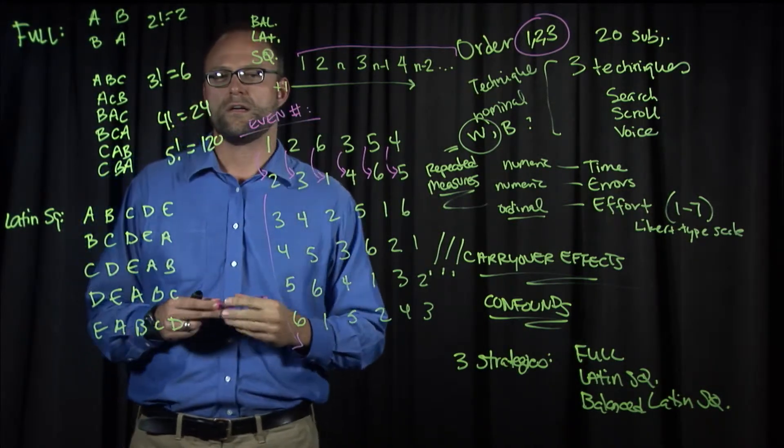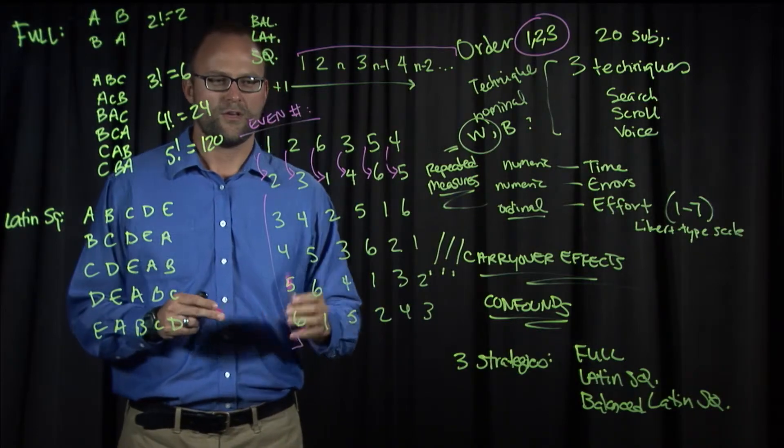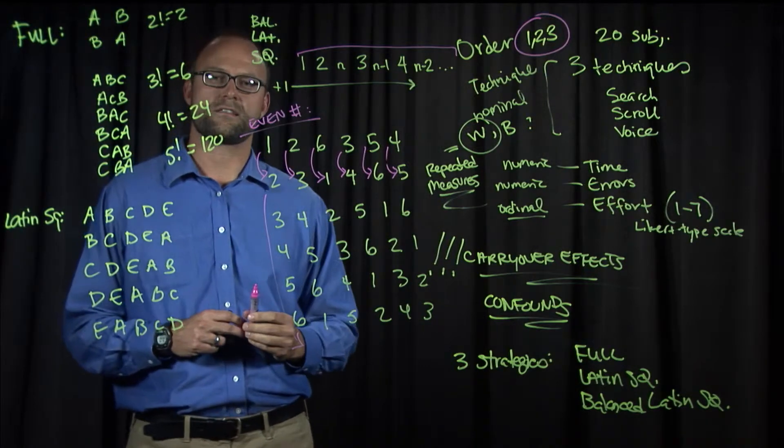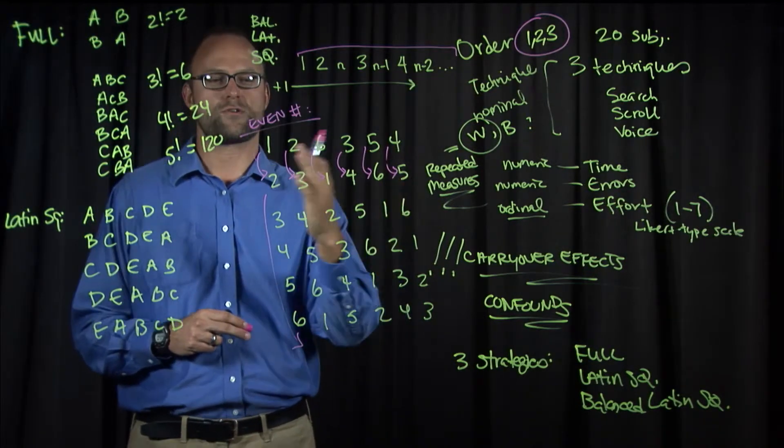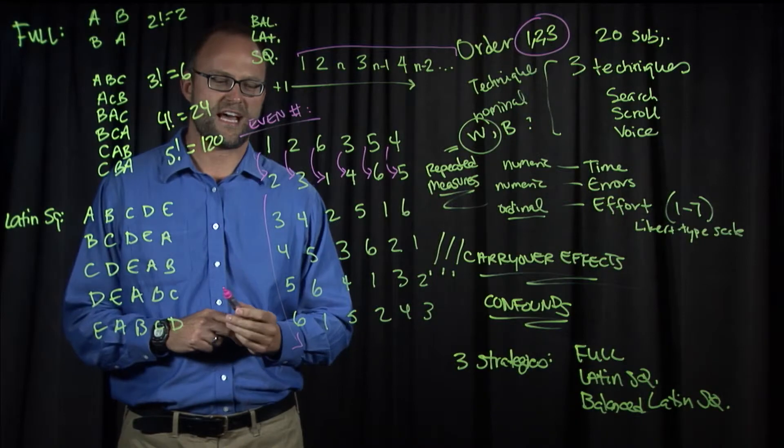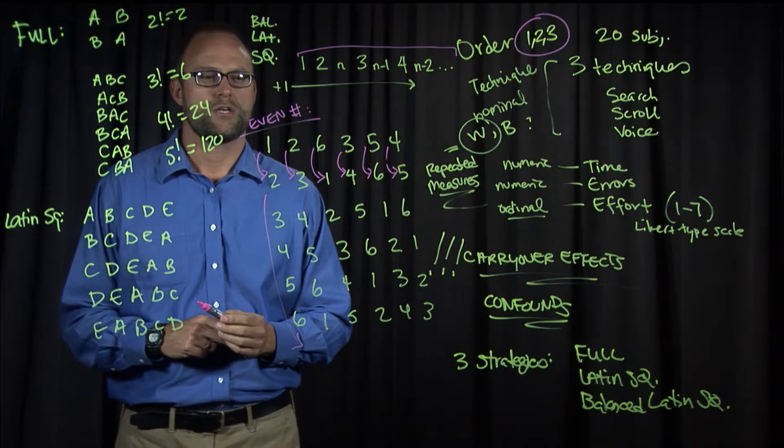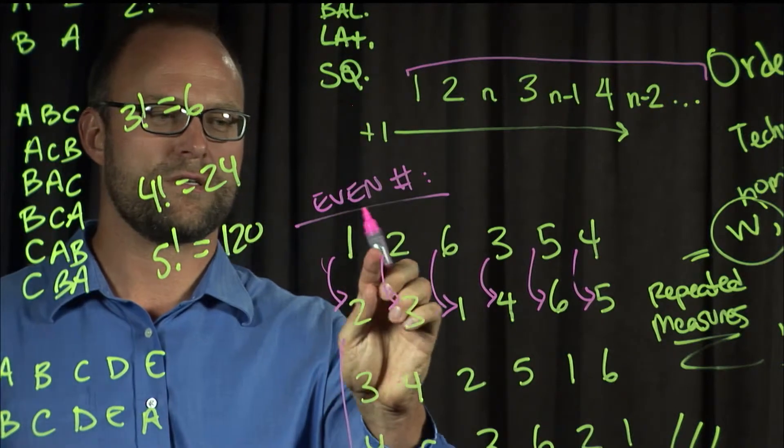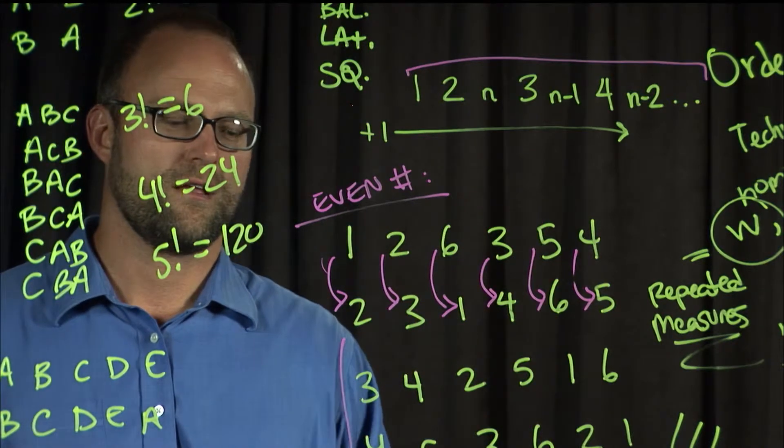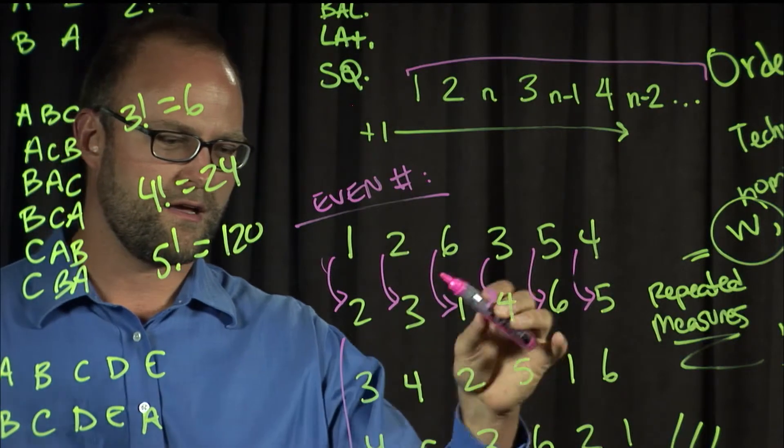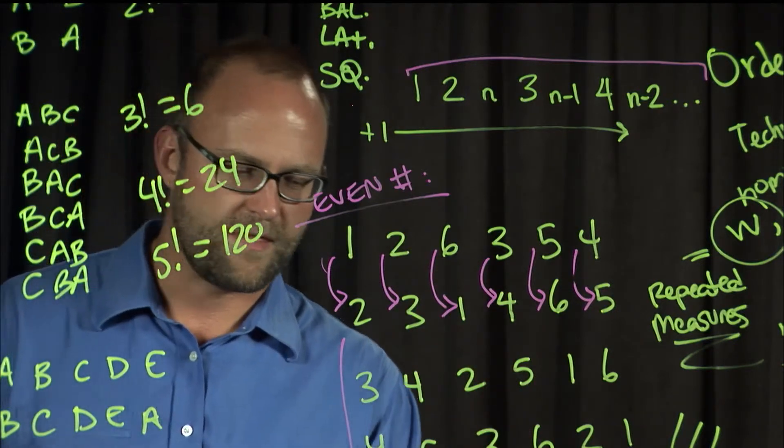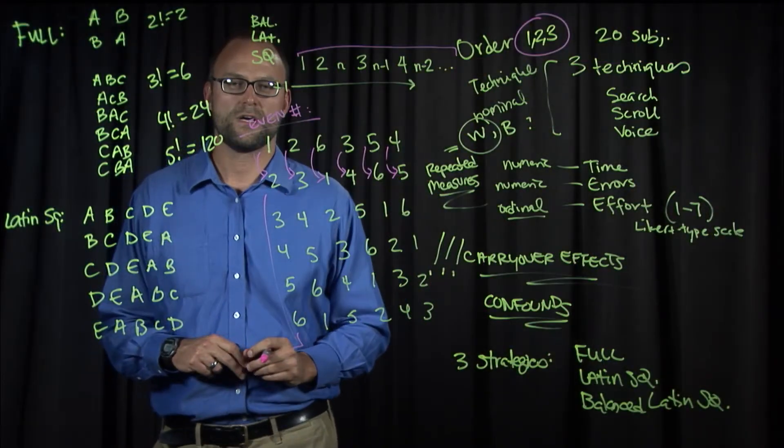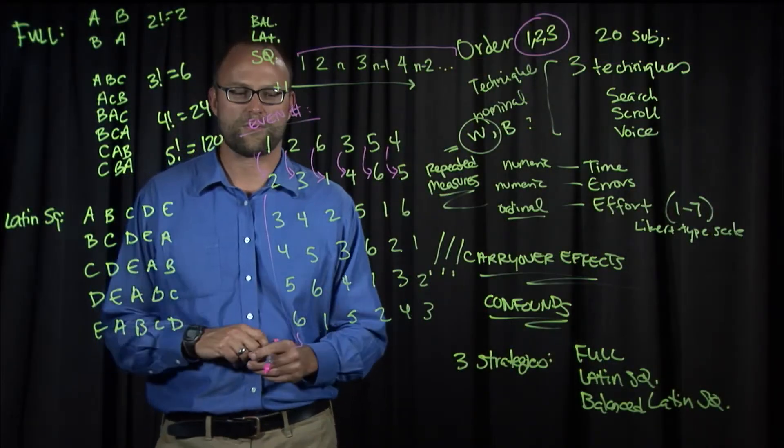Now this is if you have an even number of conditions. If you have an odd number, it's not too much more complicated. You simply build the same initial table, and then you double the size of that table by reversing all of the rows that you just established, and that gets you your property. So if we had five conditions, we'd have one, two, five, three, and four. And then we would reverse that in the beginning of the second half of the table.